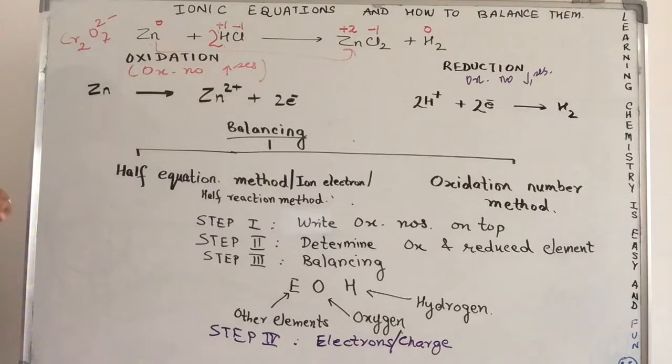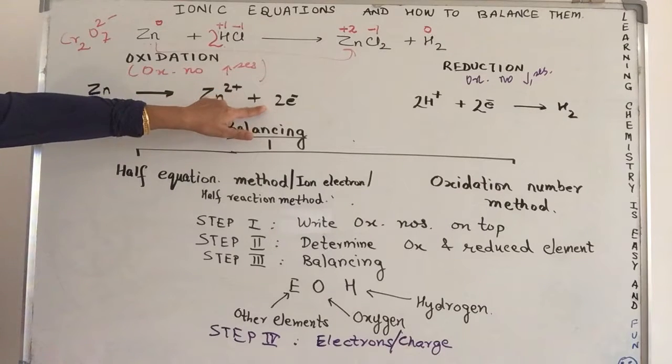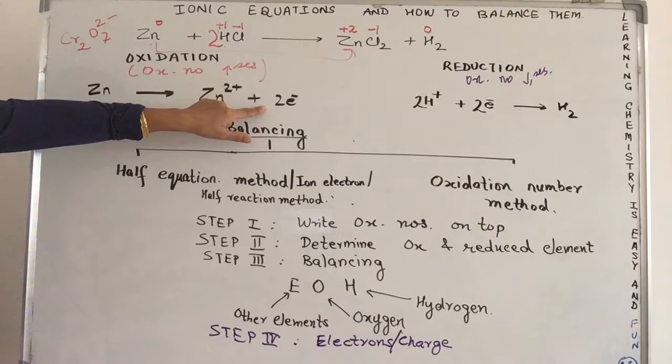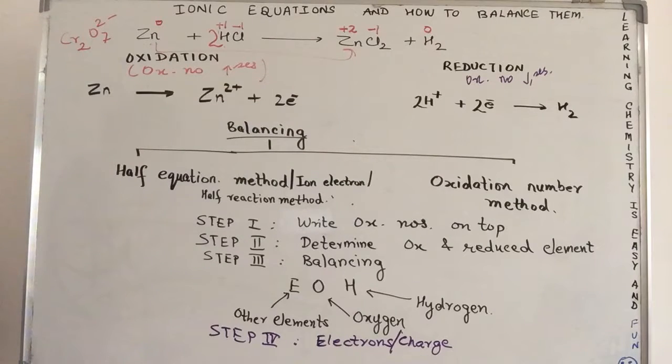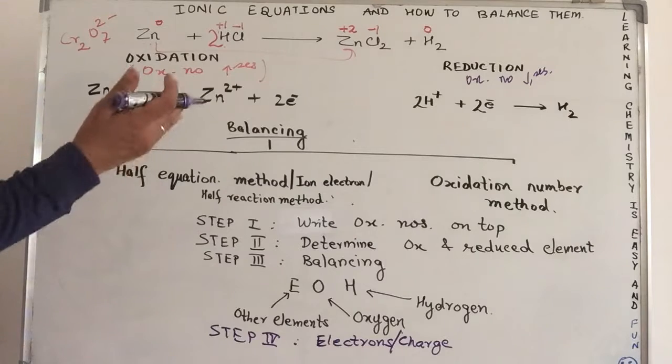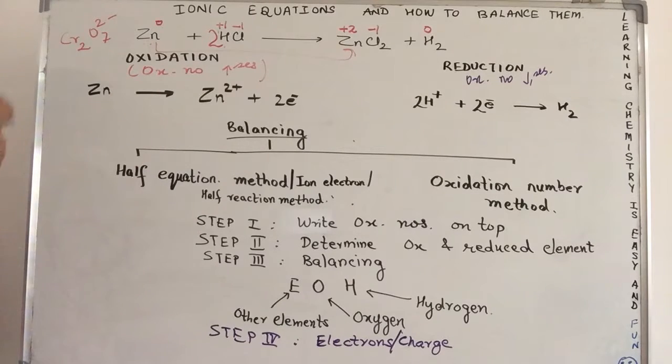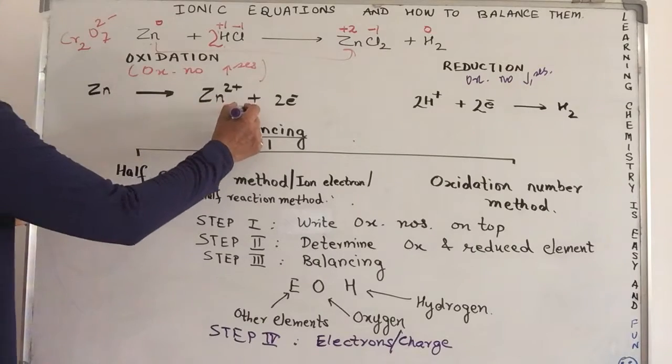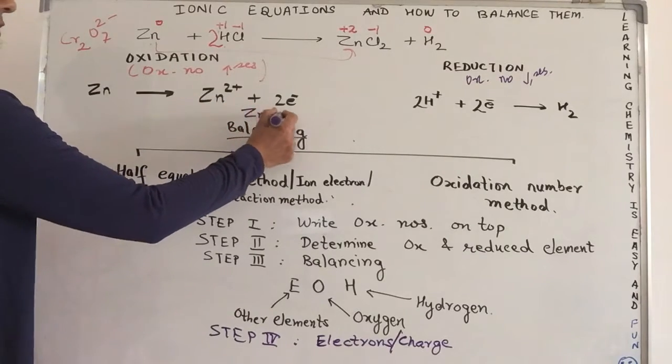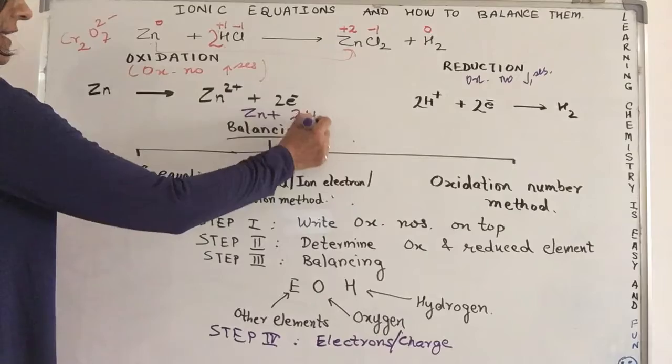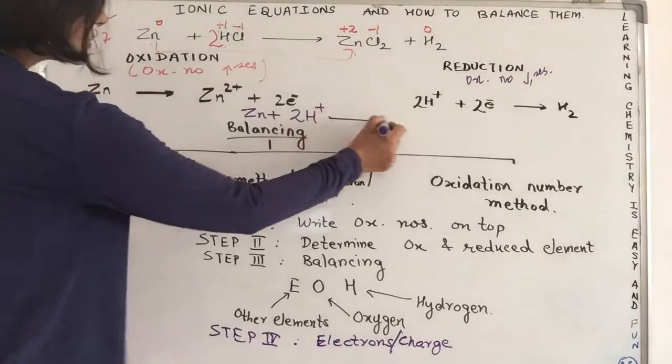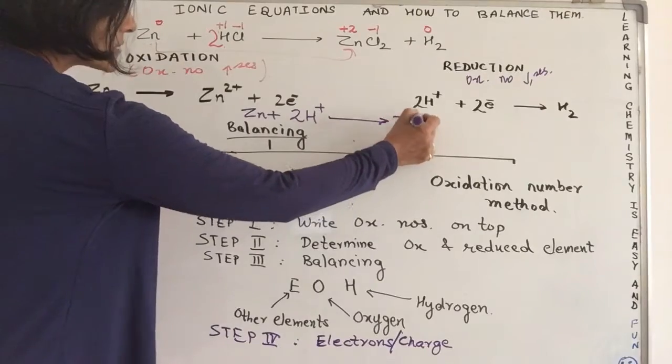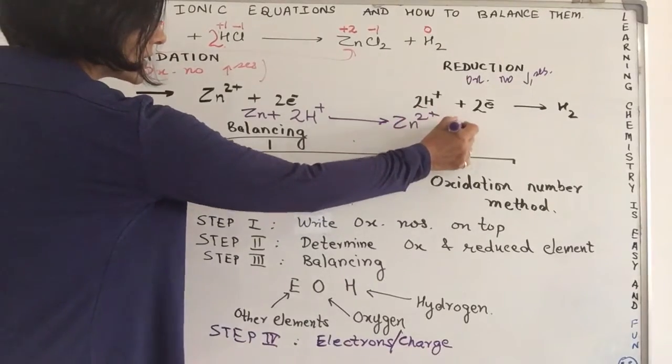So, my final ionic equation. You see over here, the number of electrons lost in oxidation is equal to the number of electrons gained in reduction. So, they nullify. One is losing, the other is gaining. So, there are no electrons left. And my final equation simply boils down to Zn plus 2H positive changes to Zn2 positive plus H2.